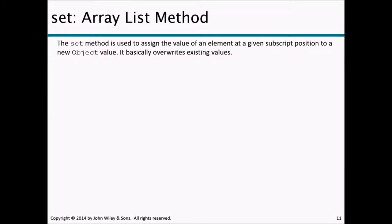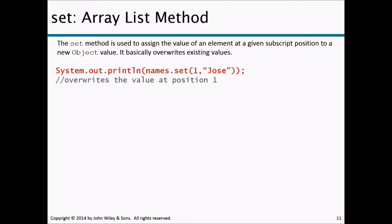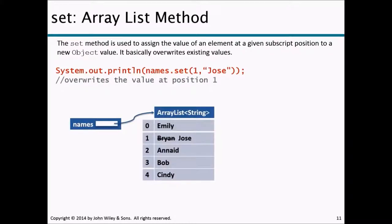The set method is used to assign the value of an element at a given index position to a new object value — it overwrites existing values. For example, names.set(1, "Jose") means: whatever value you have at position 1, overwrite it with Jose. Our original list had Brian at position 1, so it becomes Emily, Jose, Anaheed, Bob, Cindy. The size of the array stays the same because we are only replacing, not adding or removing.